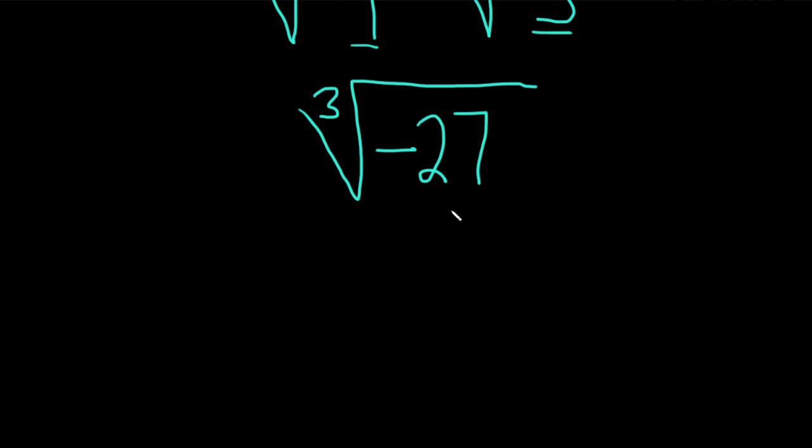Well, the cube root of 27 is 3, because it's really 3 cubed. So let's go ahead and write it that way.